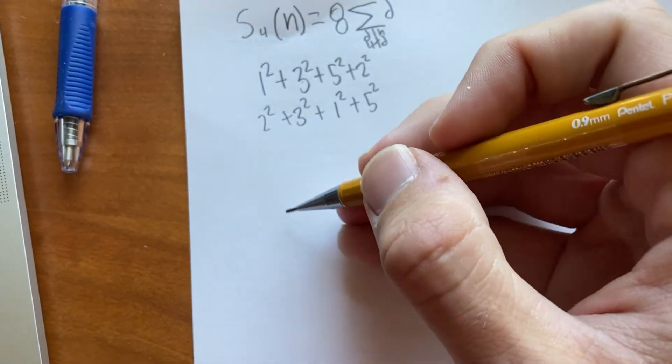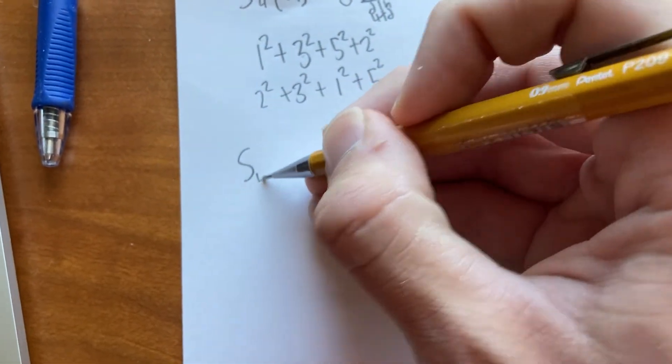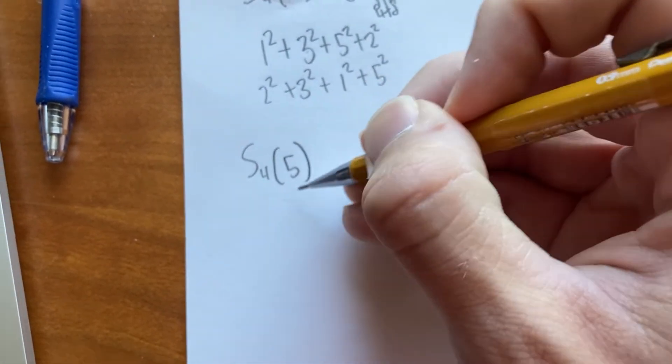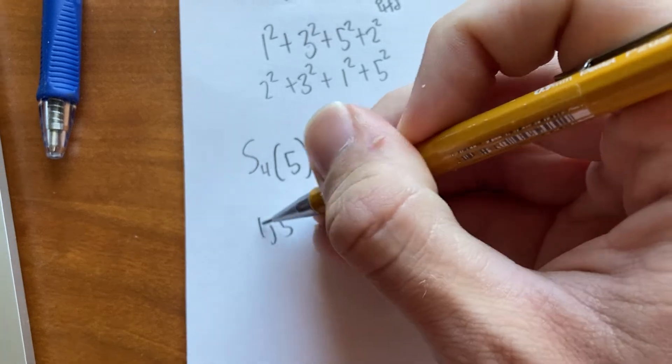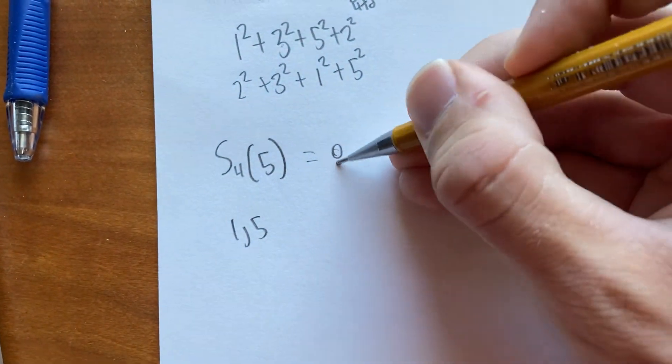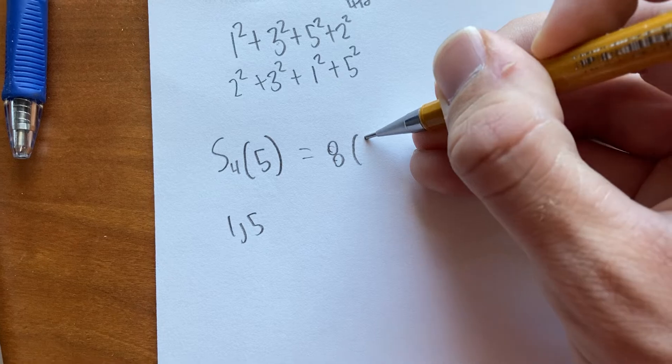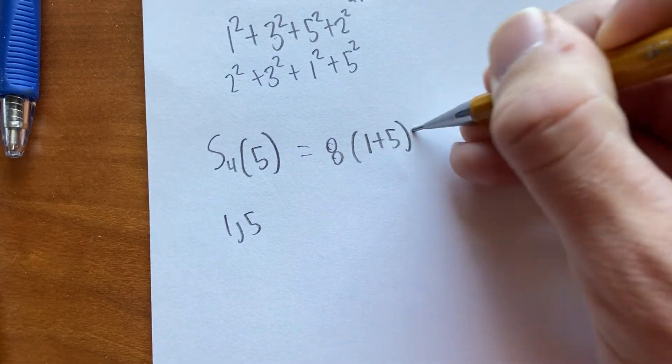So, for example, if we wanted to do five, we could just do, what are the divisors of five? One and five, neither are multiples of four. So we just take our eight and multiply by one plus five, which is 48.